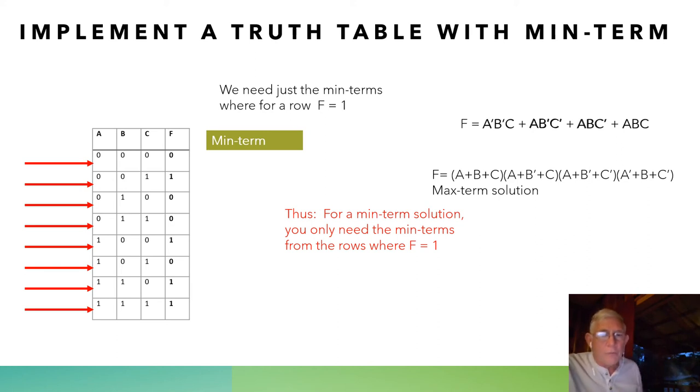Now for the max-term solution, notice we have or input gates and one big and gate for the output as opposed to and input gates and one or gate for the output. And here we're using the max-terms from the rows where F equals zero. And you notice in this particular case, since there were four rows where F equals one and there were eight rows, that meant four rows where F equals zero. Obviously, it doesn't have to work out that way, but in this case, it did.